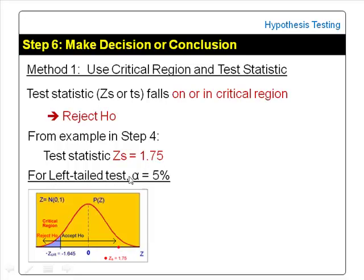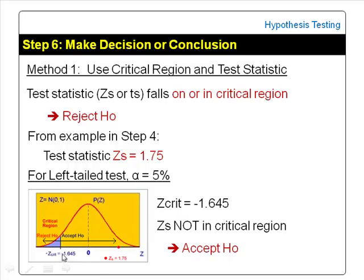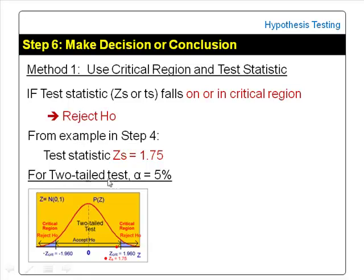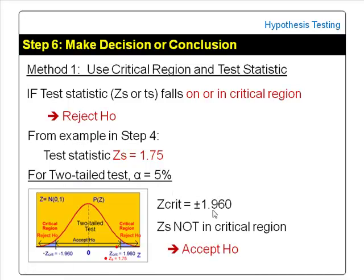Similarly, for a left-tailed test with alpha equal to 5%, the critical value minus z-critical is minus 1.645. The test statistic 1.75 does not fall inside the critical region, so the conclusion is: accept the null hypothesis. For a two-tailed test with alpha equal to 5% divided into two tails, there are two critical values — plus and minus z-critical — and two critical regions. The critical values are plus 1.96 and minus 1.96. The test statistic 1.75 does not fall inside the critical region, so the conclusion is: accept the null hypothesis.